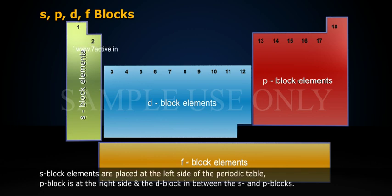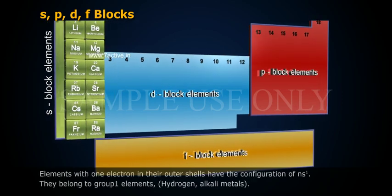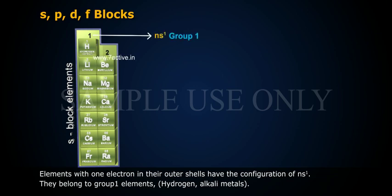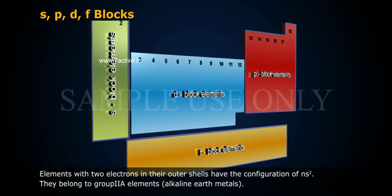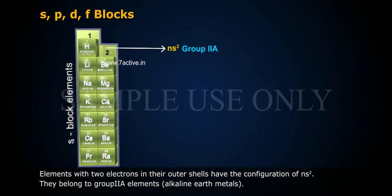S-Block Elements are placed at the left side of the Periodic Table. P-Block is at the right side, and the D-Block is in between the S and P blocks. F-Block is placed separately at the bottom of the Main Table.